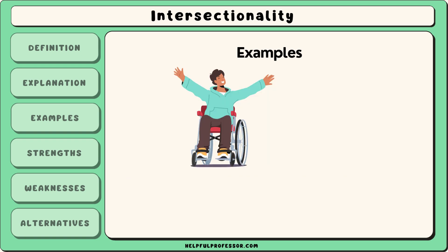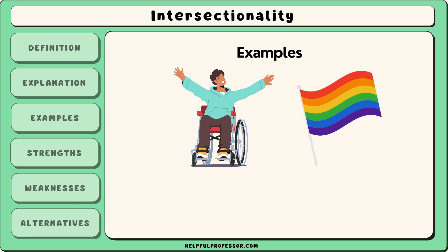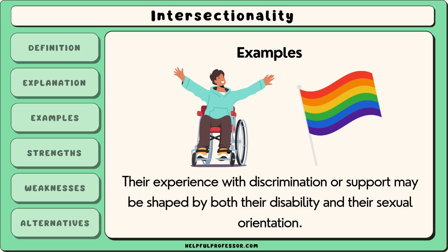Another example could be a disabled person who is also part of the LGBTQ+ community. Their experience with discrimination or support may be shaped by both their disability and their sexual orientation, creating an intersection of challenges or privileges that neither group alone might face.